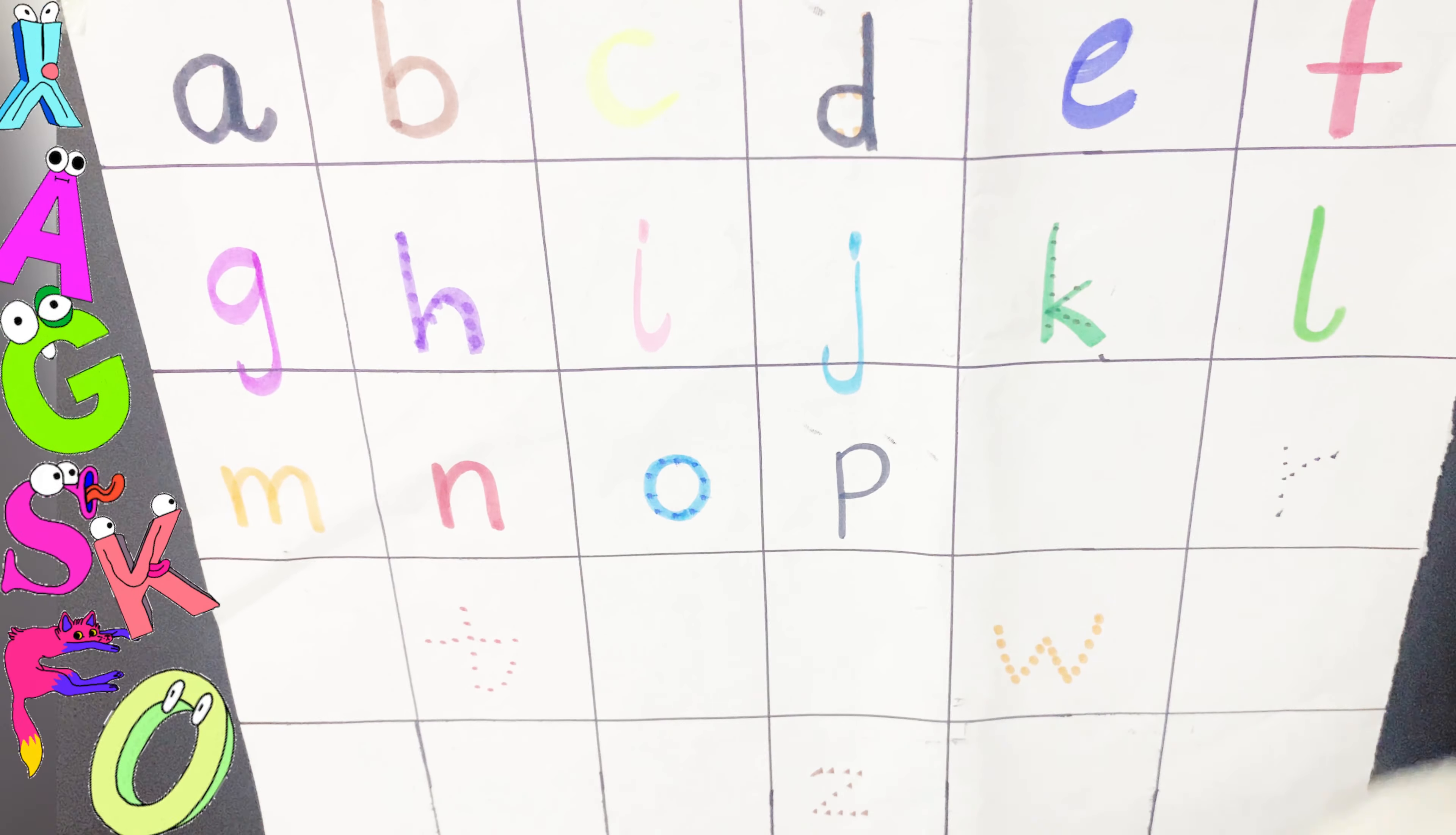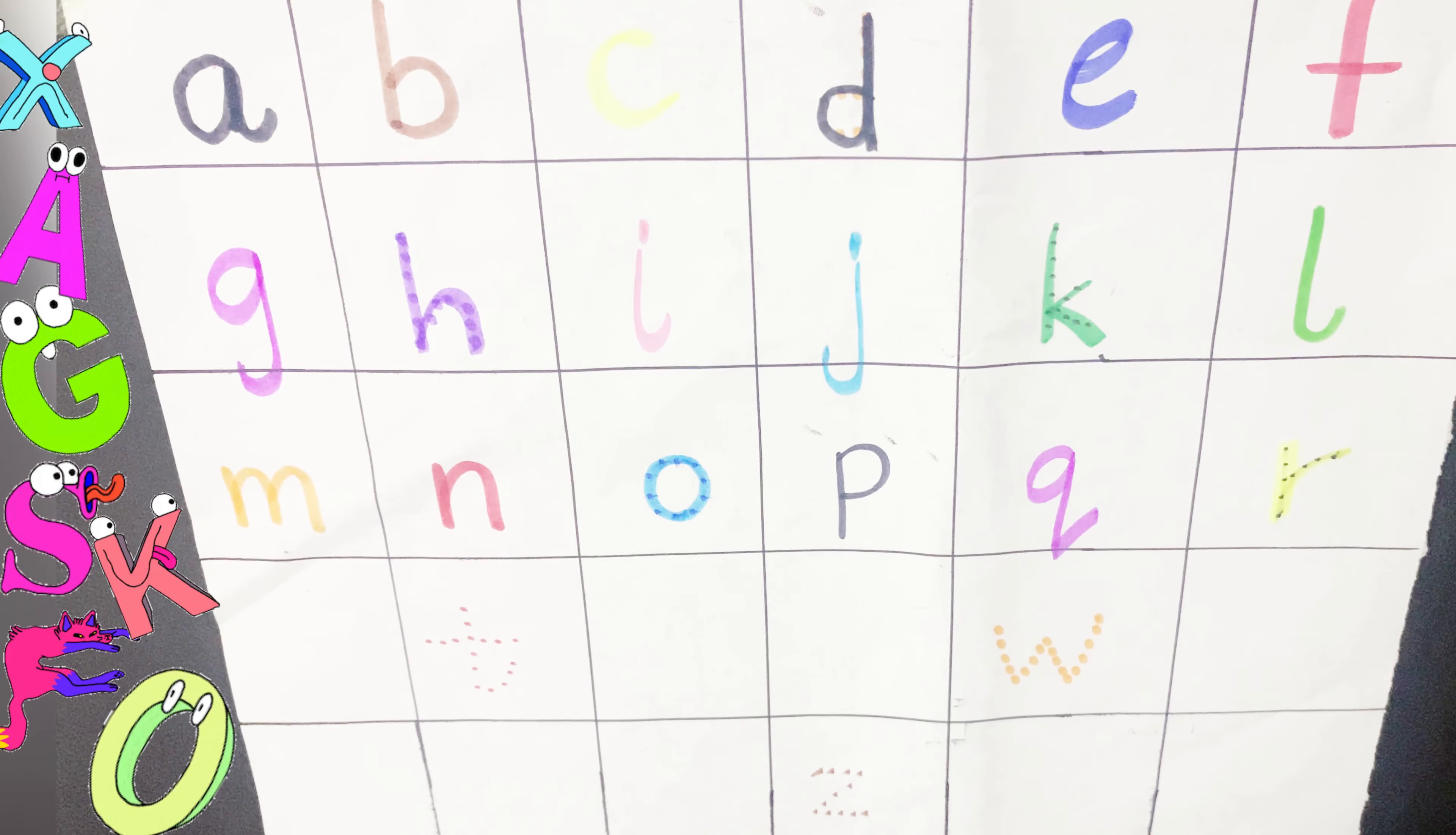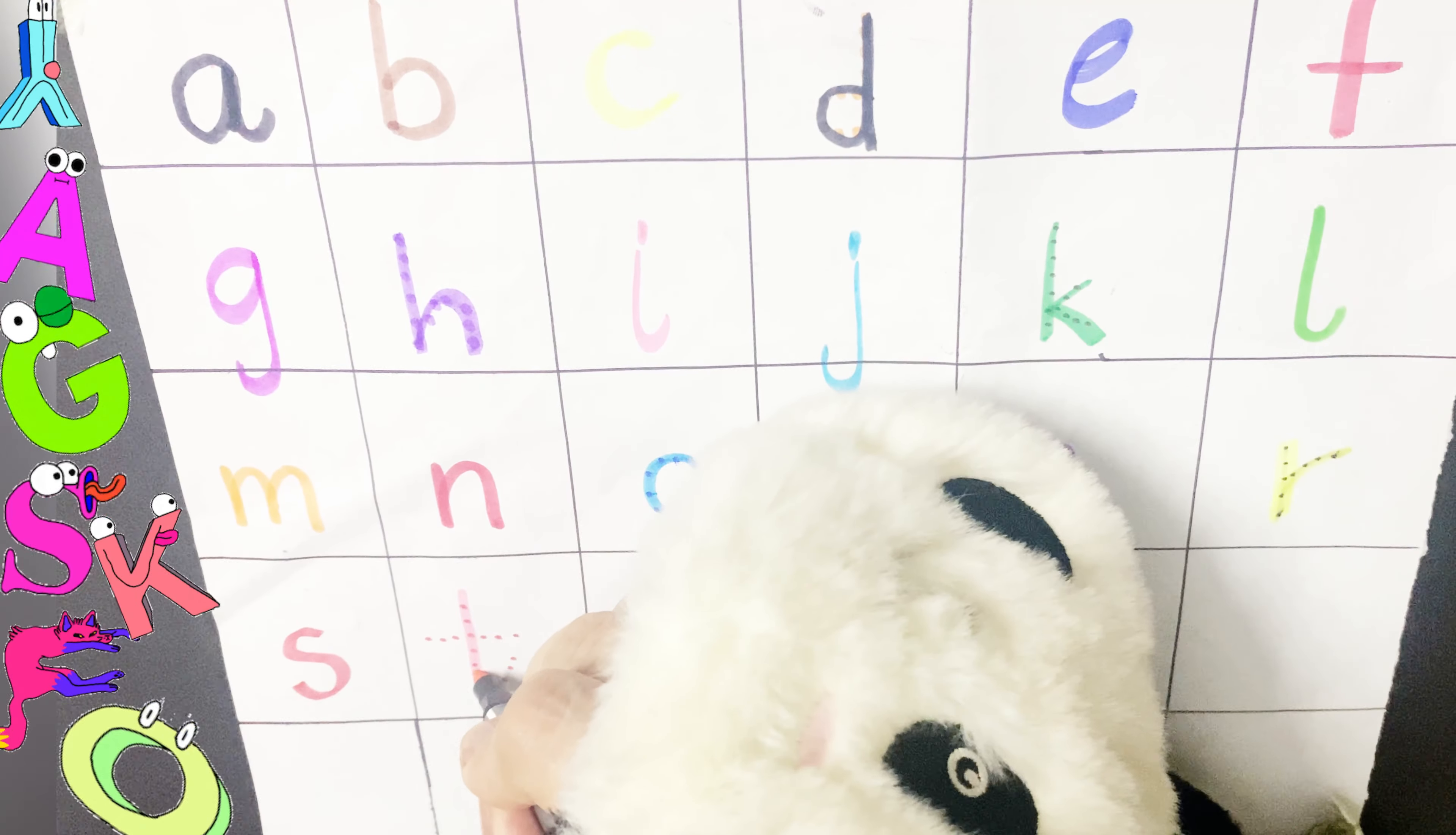Q is for Quail. R is for Rainbow. S is for Sun. T is for Turtle.